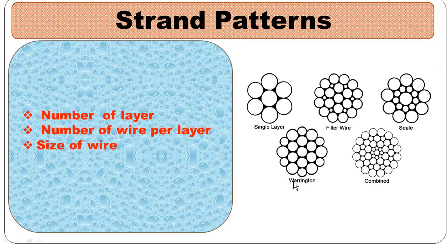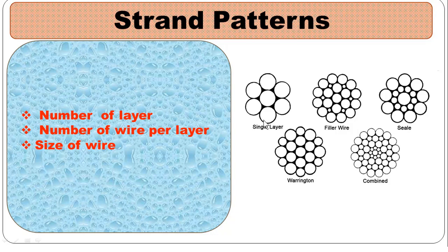seal, Warrington, and combined. Single layer, as you can see, has only one layer around a center, with six wires around one center wire.